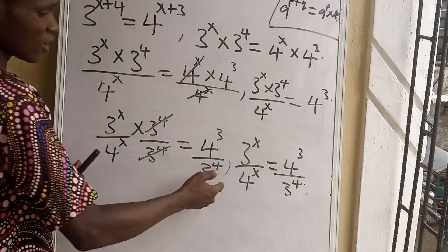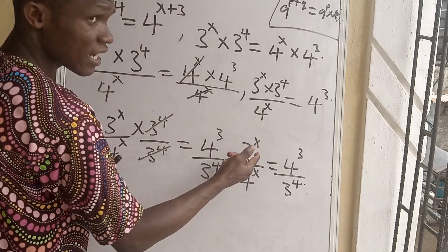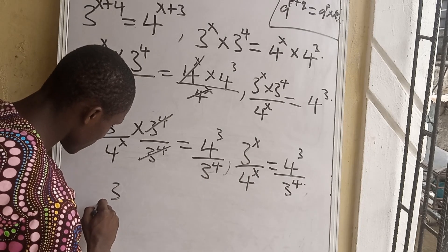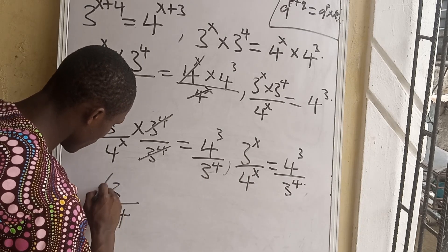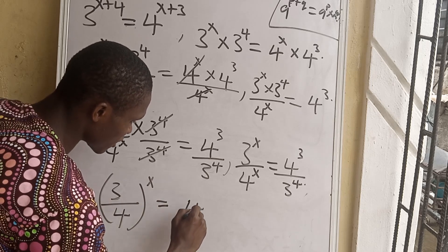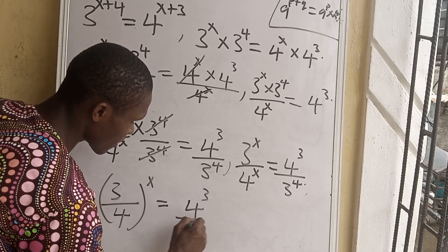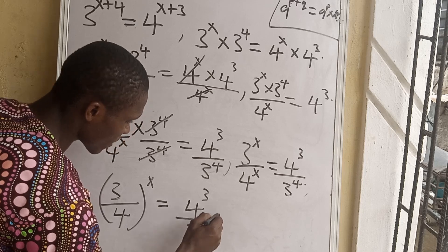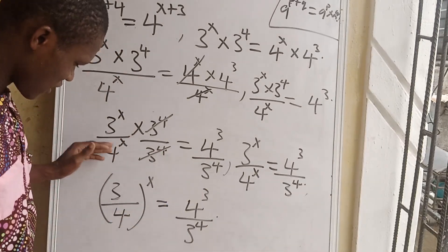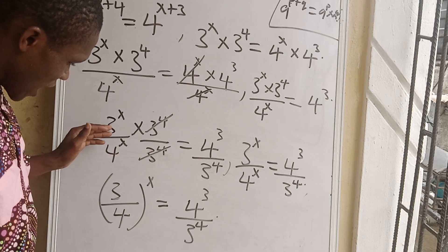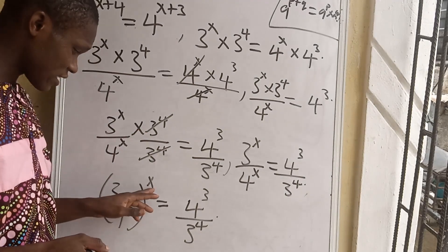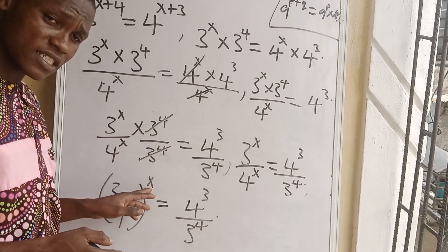We can see that x is common in the expression 3^x over 4^x. Using the quotient of powers rule, we can rewrite this as (3/4)^x. So we have (3/4)^x equals 4^3 over 3^4. In order to make x stand on its own, we will apply the logarithm.